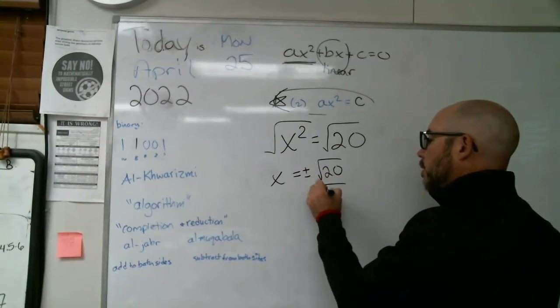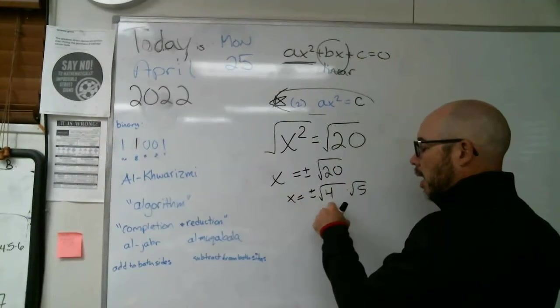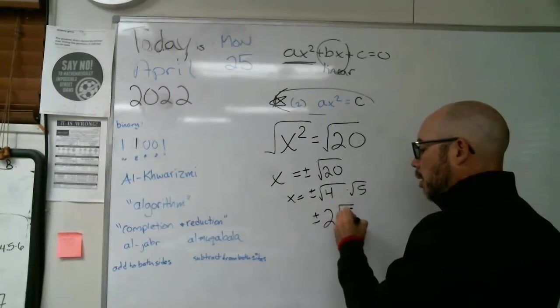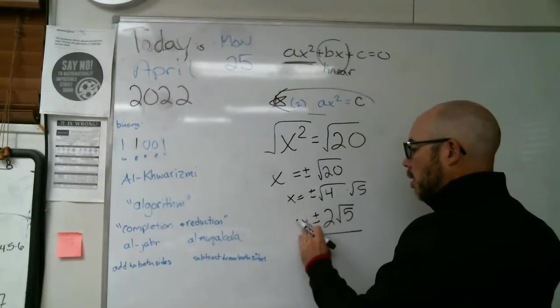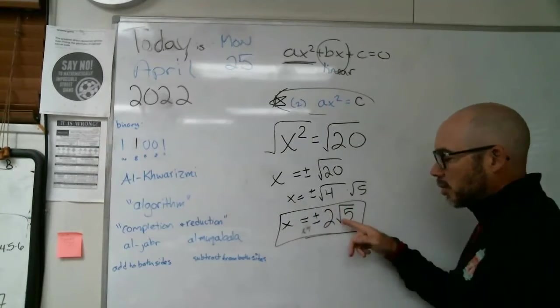Okay. So this is really square root of four times the square root of five. And this part can turn into two and that part be this. So here is a totally legitimate way to write the answer to this problem.